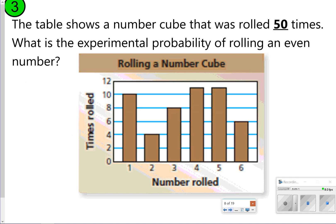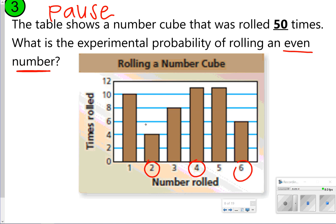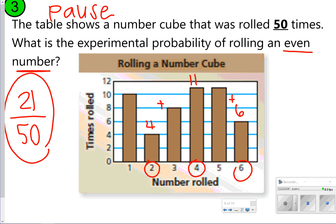Here's another one to try — find the experimental probability of rolling an even number. You're focusing on your even numbers: you rolled a 2 four times, you rolled a 4 eleven times, and you rolled a 6 six times. 4 plus 11 plus 6 is 21, and that's going to be 21 out of 50. That is already in simplest form because 21 and 50 do not have anything in common other than 1.